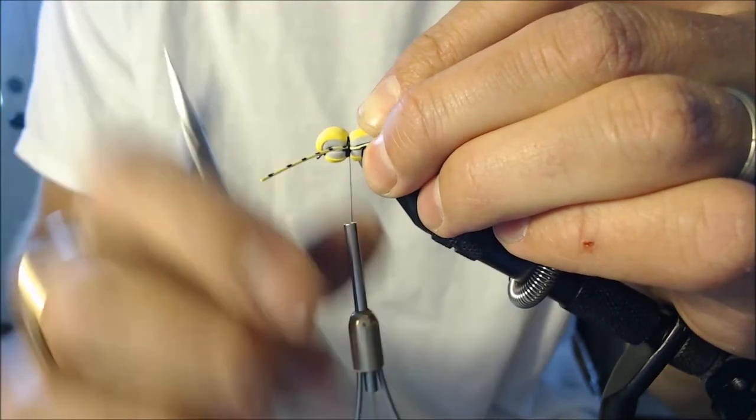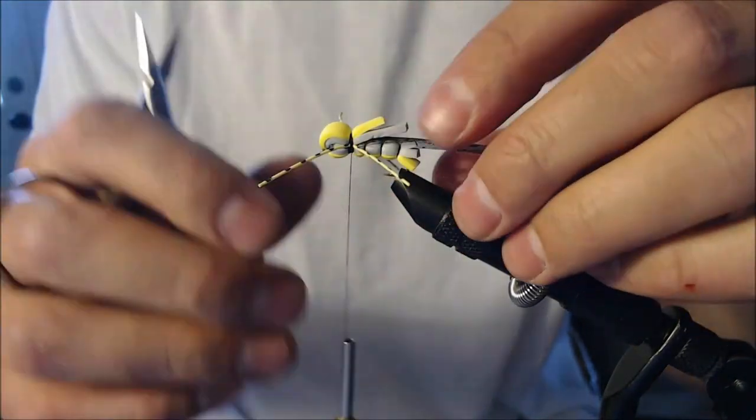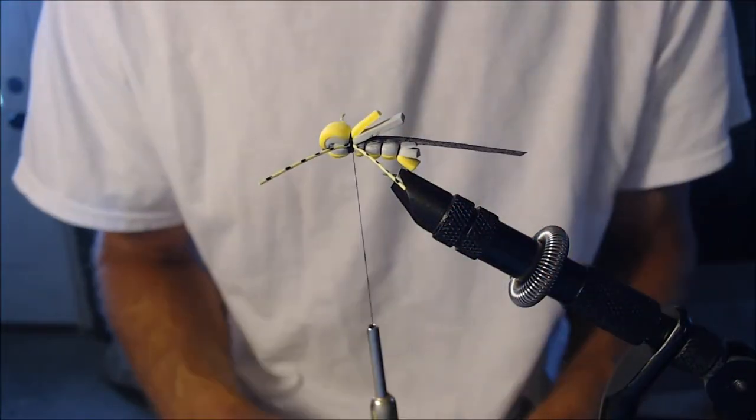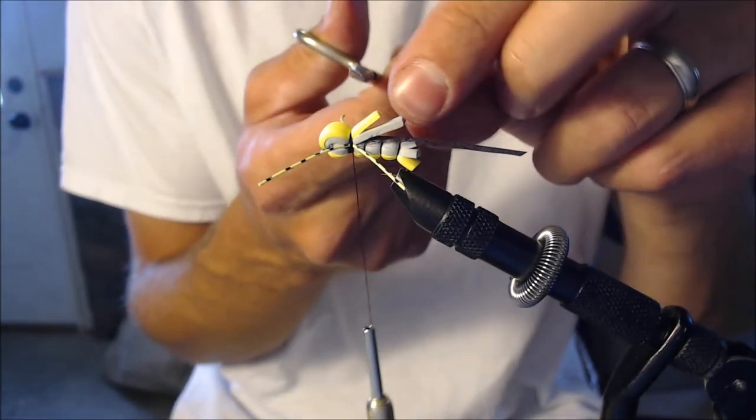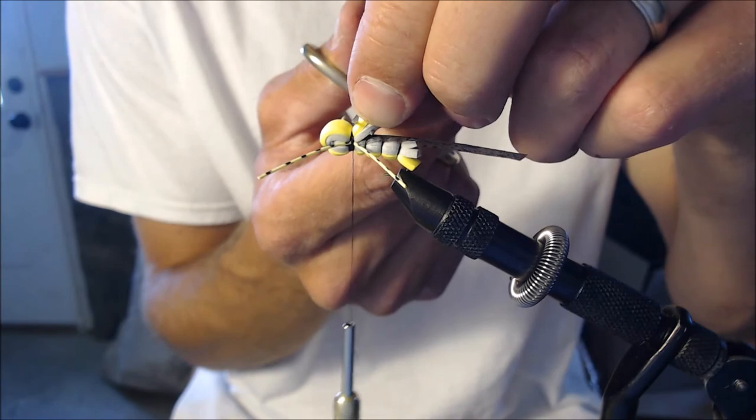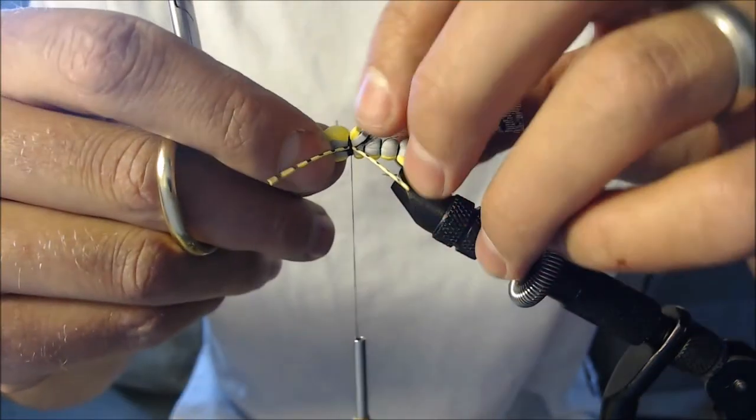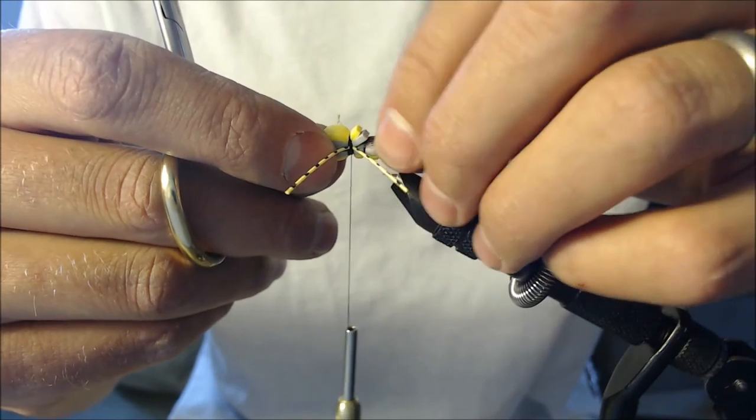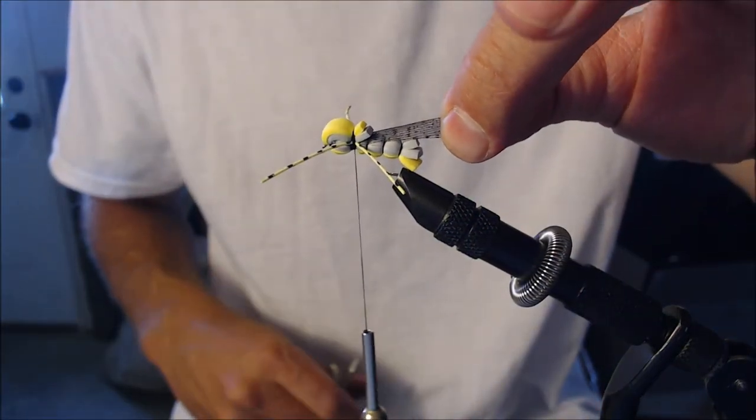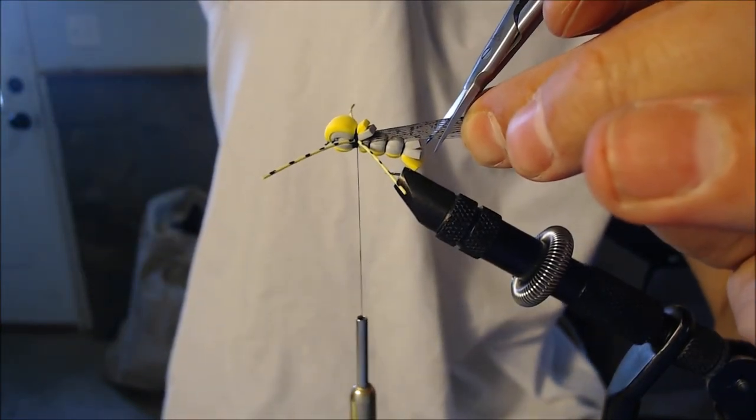Okay, that looks pretty good. Now I don't need this quite as long as it is, so I'm going to snip that right about there. Grab the wing material. I like to pinch it like this, now come in with my scissors and I cut it at an angle. This gives it kind of that grasshopper wing cut when you're done.